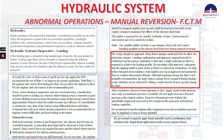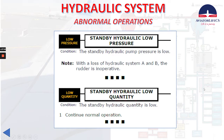The last two checklists to mention — you can read them in the QRH. Low pressure for the standby system: condition — the standby hydraulic pump pressure is low. Note: with the loss of hydraulic system A and B, the rudder is inoperative. Low quantity: condition — the standby hydraulic quantity is low. Continue normal operations.